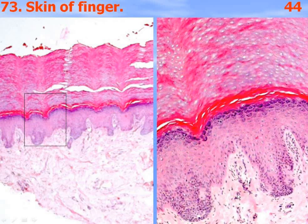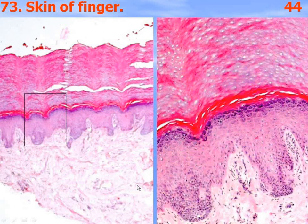Dermis consists of a papillary layer and a reticular layer. The papillary layer is mostly loose connective tissue, and the reticular layer is dense irregular connective tissue.